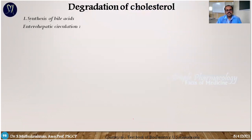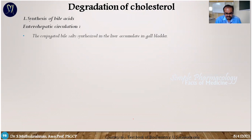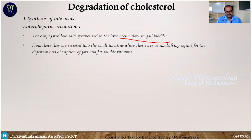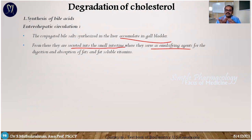Regarding enterohepatic circulation: bile acids are synthesized in the liver, stored in the gallbladder, and then secreted into the small intestine. In the small intestine they serve as emulsifying agents, facilitating the absorption of fat-soluble vitamins and fatty products.